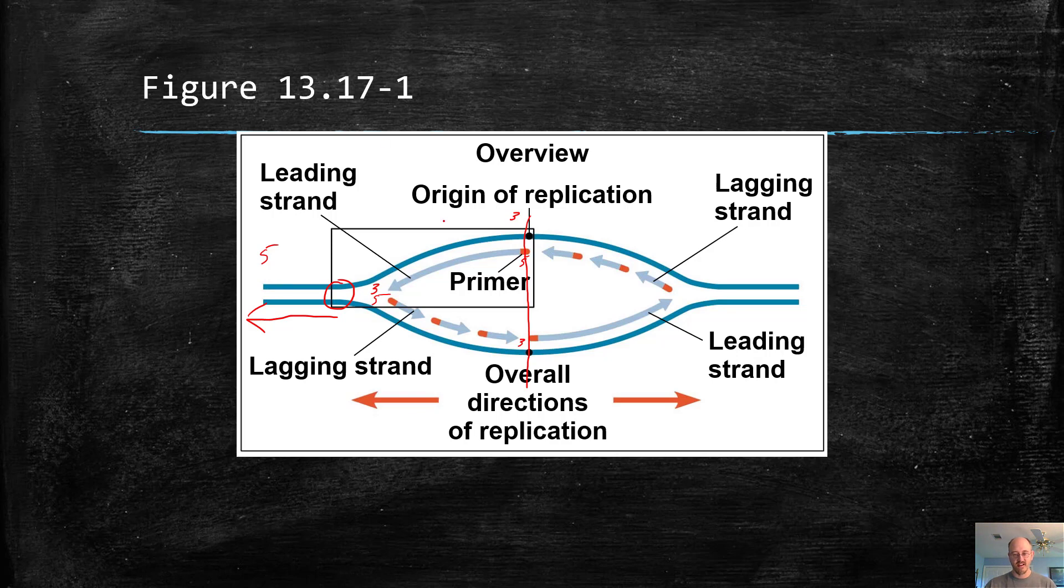Because that's the wrong direction. If you're looking at where new DNA is being unzipped, it's being unzipped to the left here. But this molecule can only copy, in this case, to the right. So helicase is moving to the left, but the enzyme that makes new DNA can only copy to the right, in this case, because of the direction of the template strand.